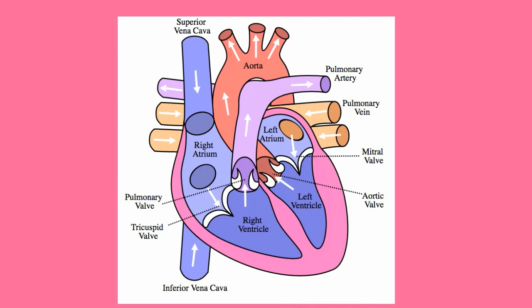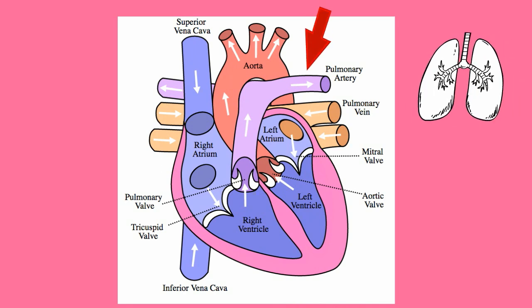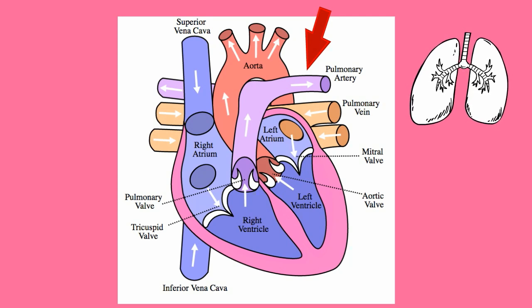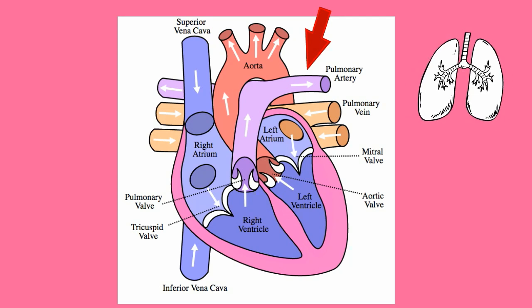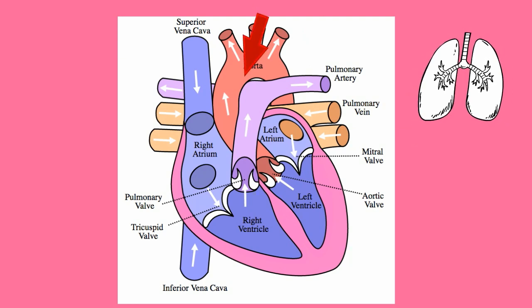If you take a look at the flow of blood around the heart, you will notice that the pulmonary artery carries blood to the lungs. This blood is oxygen poor. However, when this blood travels through the lungs and back to the heart it has lots of oxygen. Next, this oxygen-rich blood leaves the heart through an artery and flows throughout the body.